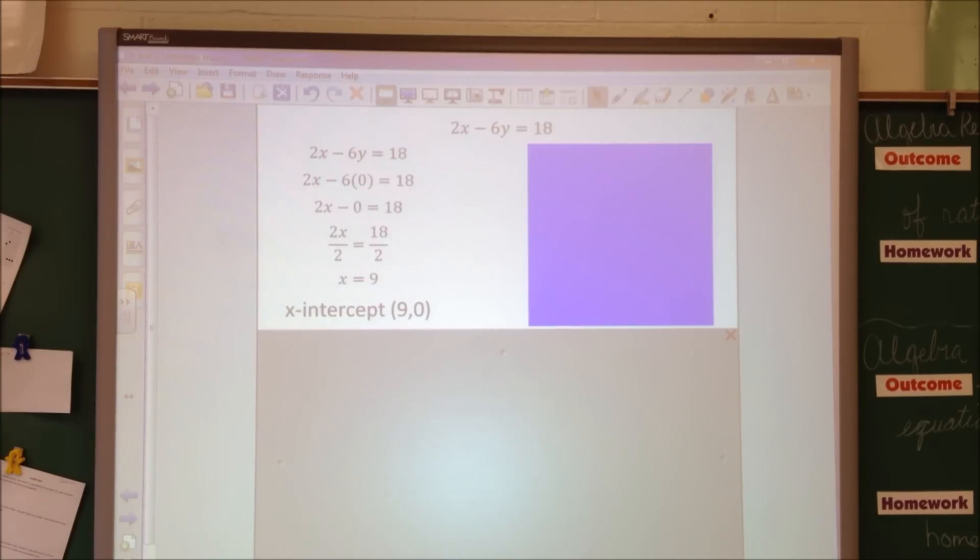Now for my y-intercept, we just learned that the x is equal to 0. So I'm going to plug in 0 where the x is. And I get 0 minus 6y equals 18. Using the identity property, negative 6y equals 18. I'm going to divide both sides by negative 6, and I find out that y equals negative 3. So the y-intercept is 0, negative 3.